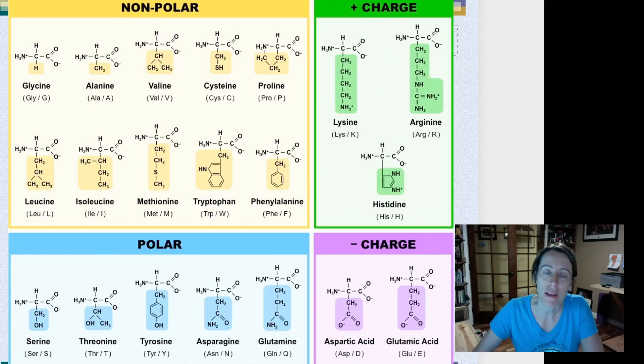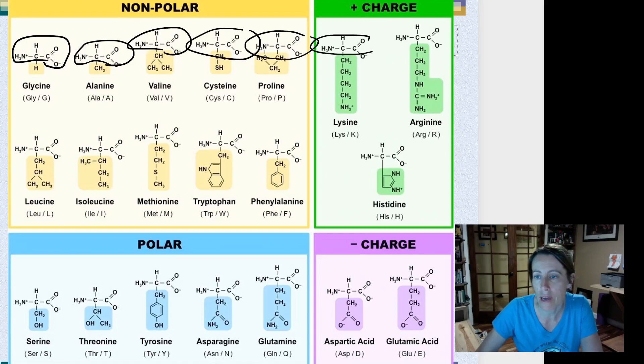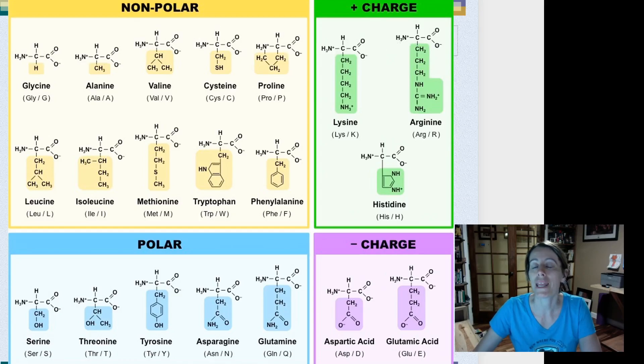Now the other thing, if we relate back to the previous video, you can see on here they all have this part in common. On every single one of these diagrams, this is the same. It doesn't matter which category they fall into. All the way through here. But what is different for each of these is the R group or the side chain. And that's what's being highlighted on this diagram - the R groups.